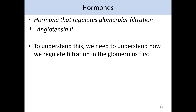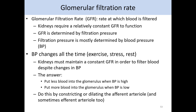In order to understand how angiotensin-2 is going to help us regulate glomerular filtration, we have to understand the basics of regulating glomerular filtration first. We need to know a little bit about something called glomerular filtration rate, or GFR. This is what it sounds like — it's just the rate at which blood is being filtered. The kidneys require a relatively constant glomerular filtration rate in order to function. And don't forget that the process of glomerular filtration is dependent on blood pressure, so blood pressure determines filtration pressure, which determines GFR.